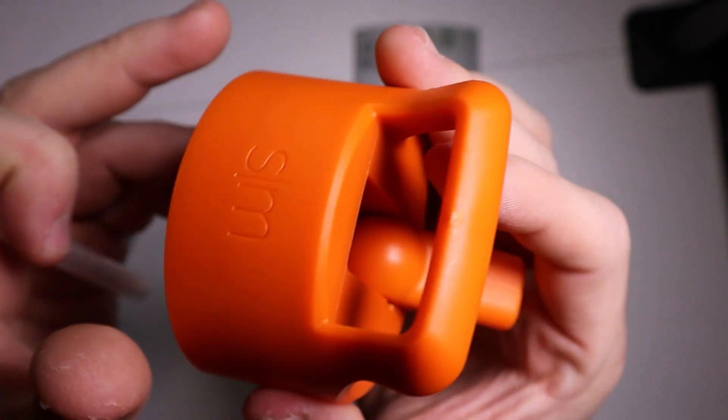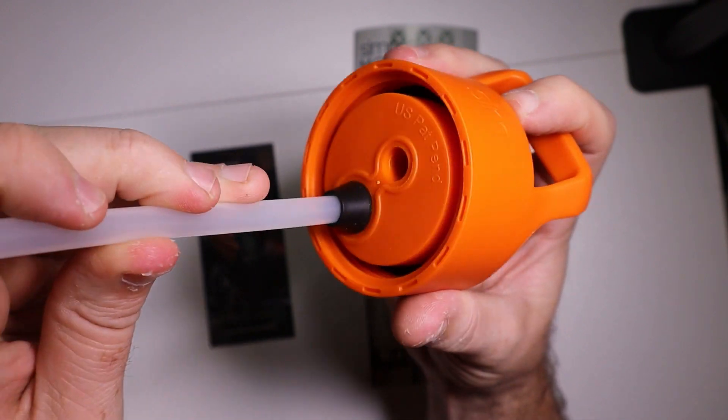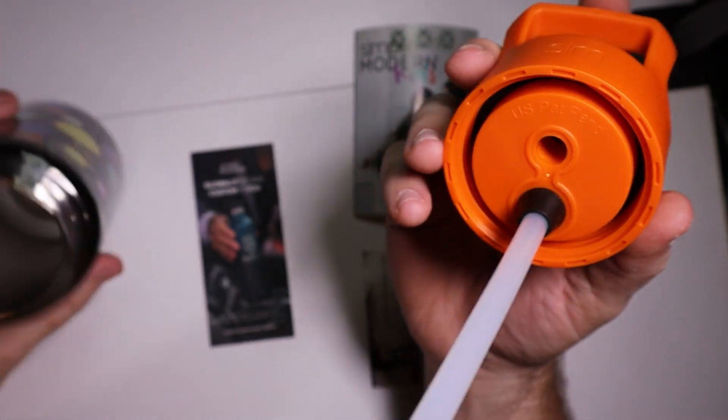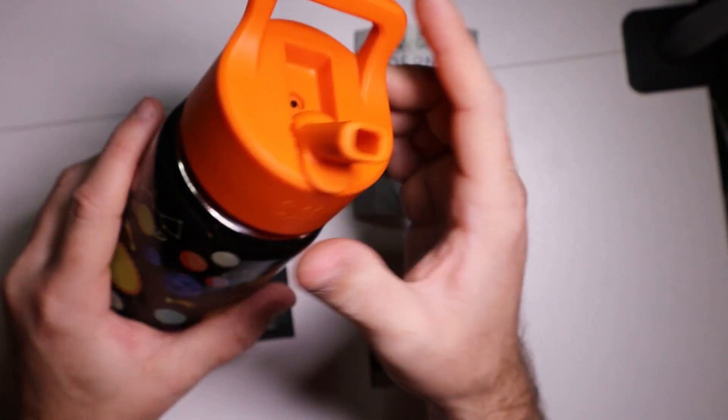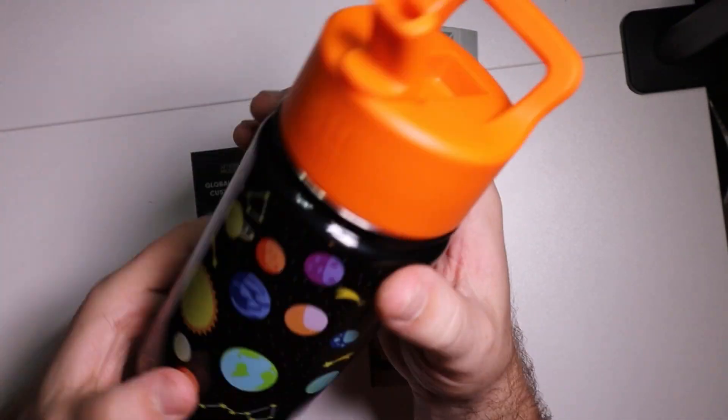So this is supposed to be washable on the top shelf of the dishwasher. This is a pretty nice little water bottle for little kids, especially because it's all metal.